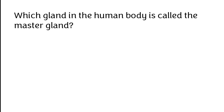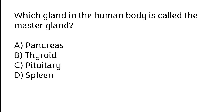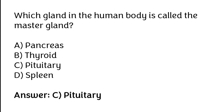Which gland in the human body is called the master gland? Pancreas, thyroid, pituitary, or spleen. The correct answer is option C. The pituitary gland in the human body is called the master gland.